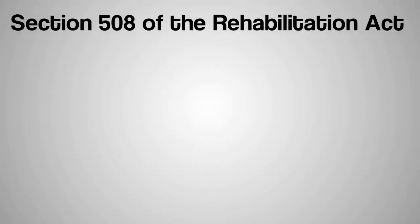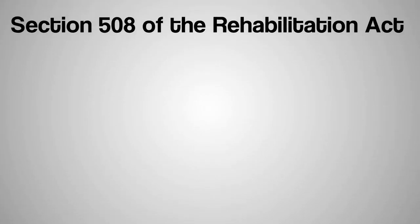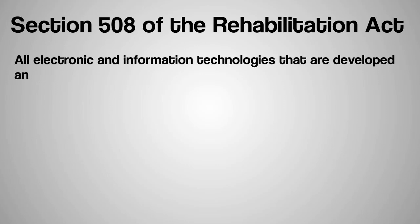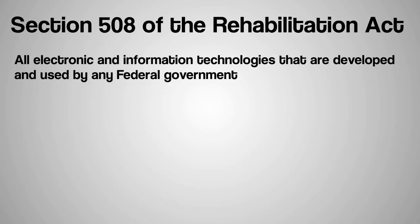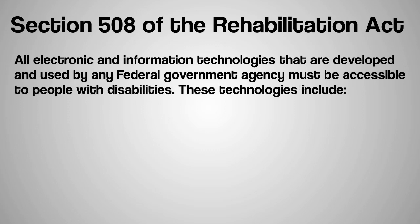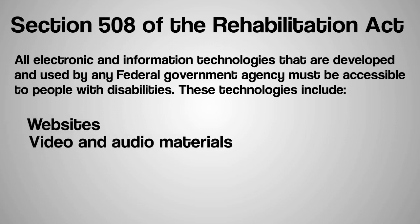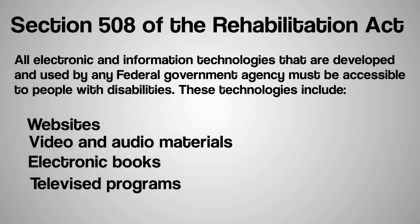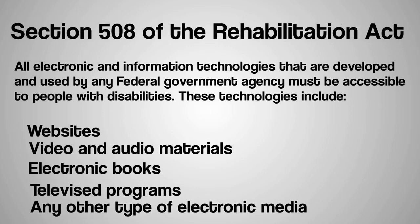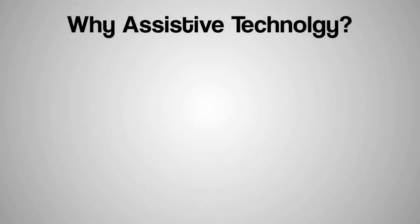On August 7, 1998, Section 508 of the Rehabilitation Act was signed into law. This act required all electronic and information technologies developed and used by any federal government agency to be accessible to people with disabilities. These technologies included websites, video and audio materials, electronic books, televised programs, and any other type of electronic media.